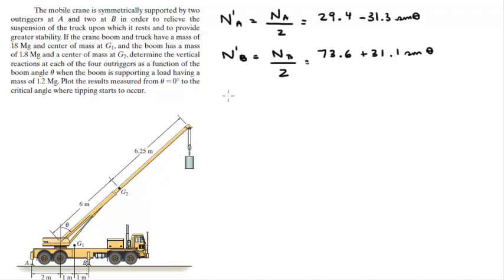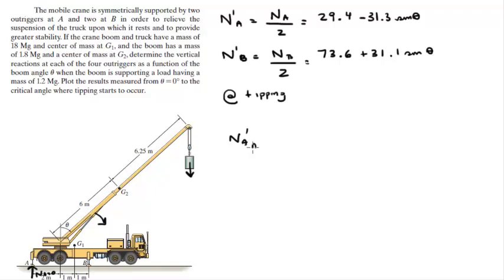Now, at tipping — tipping means when the whole truck starts to get in trouble, because when you lower the crane to a point where the weight has enough moment to start tipping the whole truck over. You know that the normal at A equals zero when the truck starts to tip over. So setting N'_A = 0: 29.4 − 31.3·sinθ = 0. Solving for theta gives θ = 70.63 degrees.